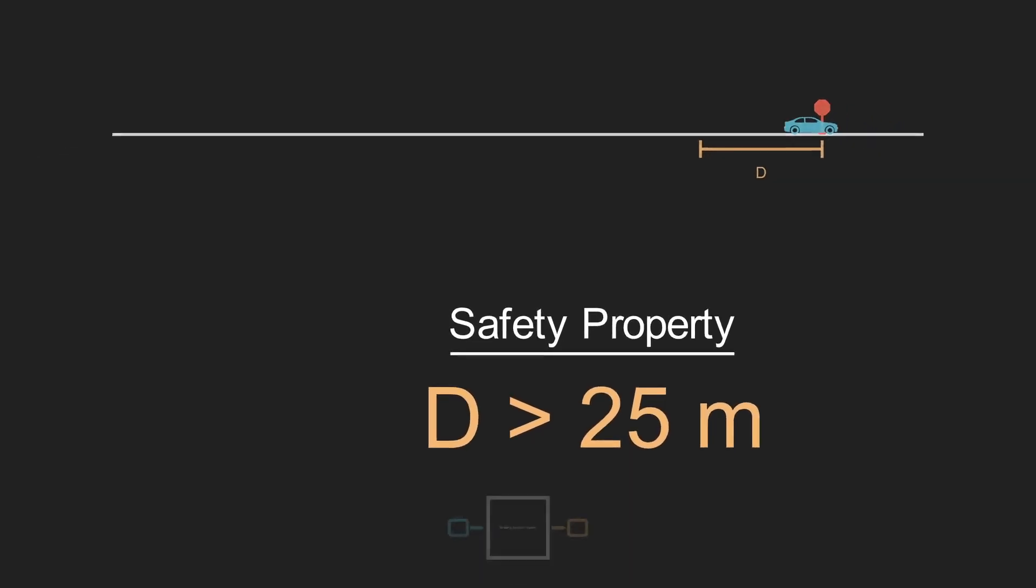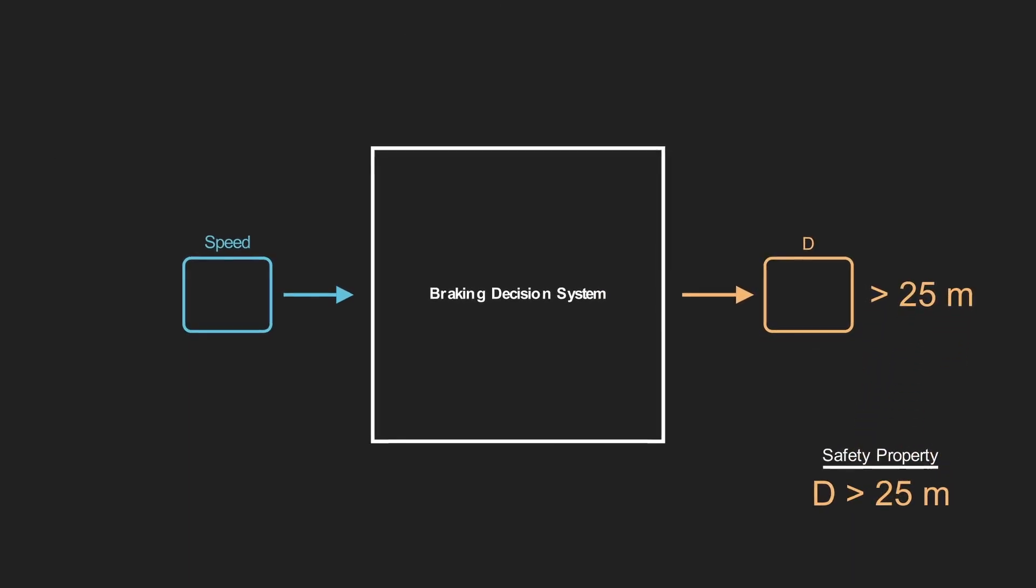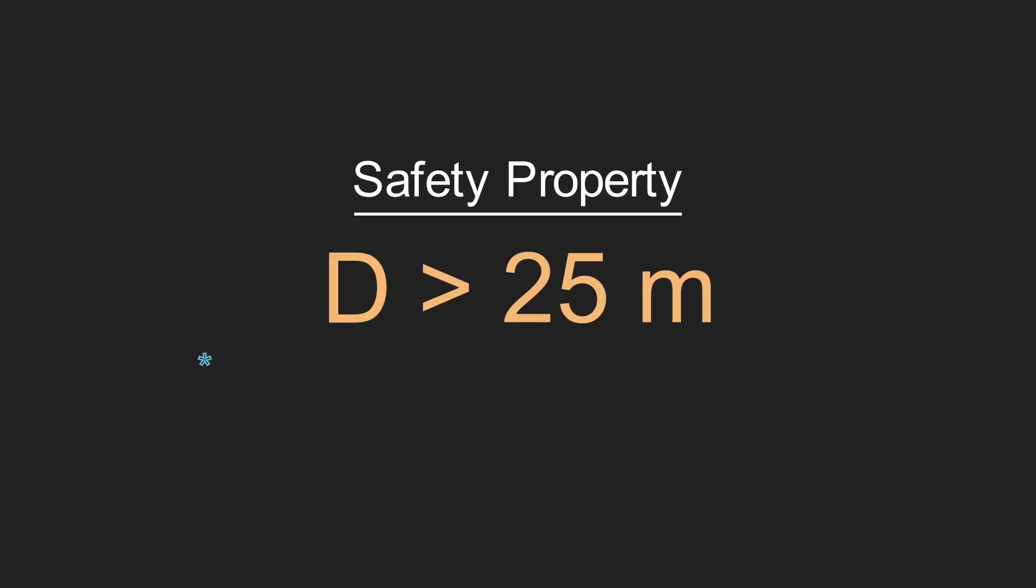Let's formalize this into a safety property. Let's say we know, based on the specifications of the vehicle, that even if the car slammed on the brakes, it would not have enough time to stop safely at the stop sign if it's given a braking distance less than 25 meters. To formalize this in math notation, our safety property requires that the braking distance D is always greater than 25 meters. In other words, the output of the braking decision system needs to be greater than 25 meters. In the verification community, we often also add some extra clarification to the safety property to specify the set of inputs we care about.